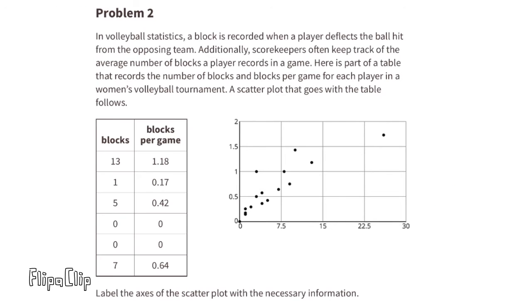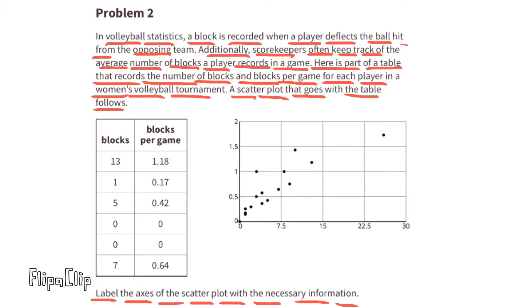Problem number two: In volleyball statistics, a block is recorded when a player deflects the ball hit from the opposing team. Additionally, scorekeepers often keep track of the average number of blocks a player records in a game. Here is part of a table that records the number of blocks and blocks per game for each player in a women's volleyball tournament. A scatter plot that goes with the table follows. Label the axes of the scatter plot with the necessary information.